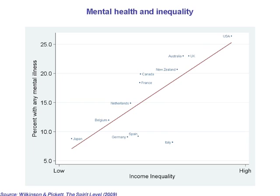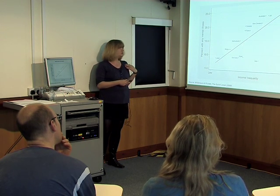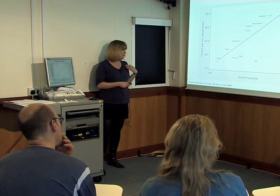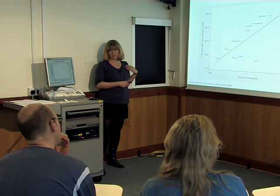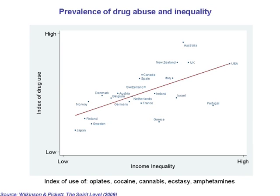Here's mental health. These data come from WHO surveys trying to do the same thing in every country. Some countries have very low levels of mental health problems — below 10% in Japan, Germany, and Spain. In the UK, 23% of us have been mentally ill within the past 12 months, and in the USA it's one in four. Those are huge three- to four-fold differences between countries, and there's a strong relationship with inequality. Drug abuse shows the same pattern — an index of use of opiates, cocaine, cannabis, ecstasy, and amphetamines — again, a relationship with inequality, with more unequal countries showing higher prevalence of drug use.